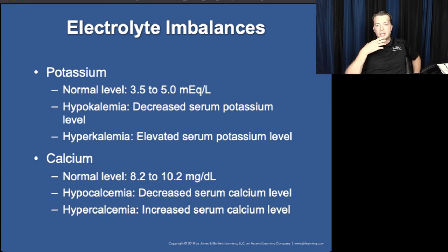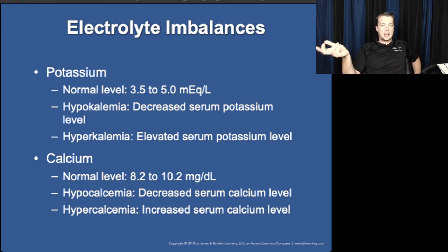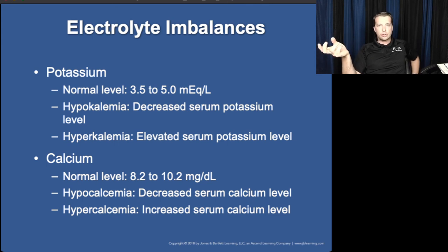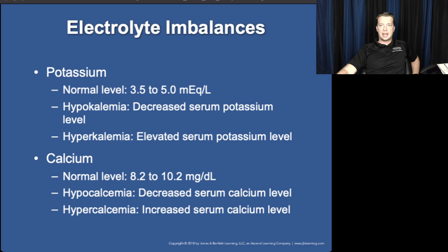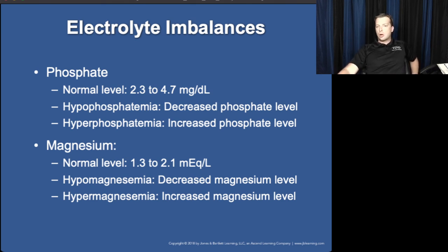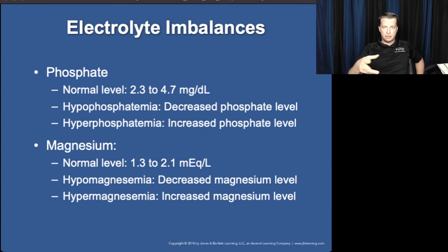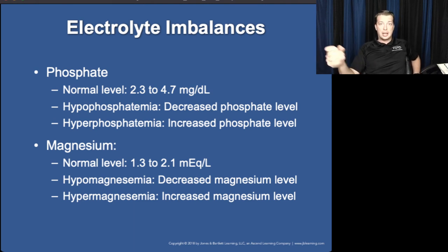Hypo- and hyperkalemia refer to low and high blood potassium levels. Calcium is fairly low in the blood but relatively high in the cell, stored in the sarcoplasmic reticulum of muscles. Calcium is instrumental in bone formation, but when blood calcium levels drop too low, the parathyroid gland secretes parathyroid hormone, which breaks down bone to release calcium into the blood. Phosphate is a key component of ATP — we take ADP, bind it with inorganic phosphate, and produce ATP, which serves as the energy source.